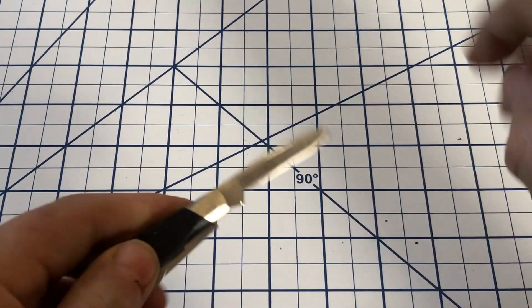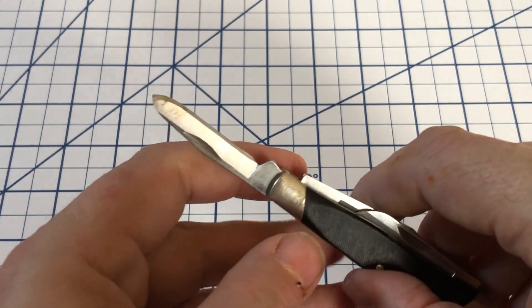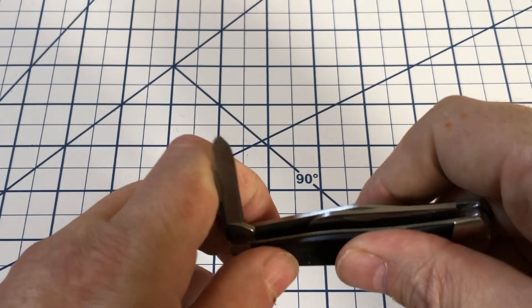And a spay blade, which as the name suggests was used for castrating or spaying cattle, sheep, and so on.